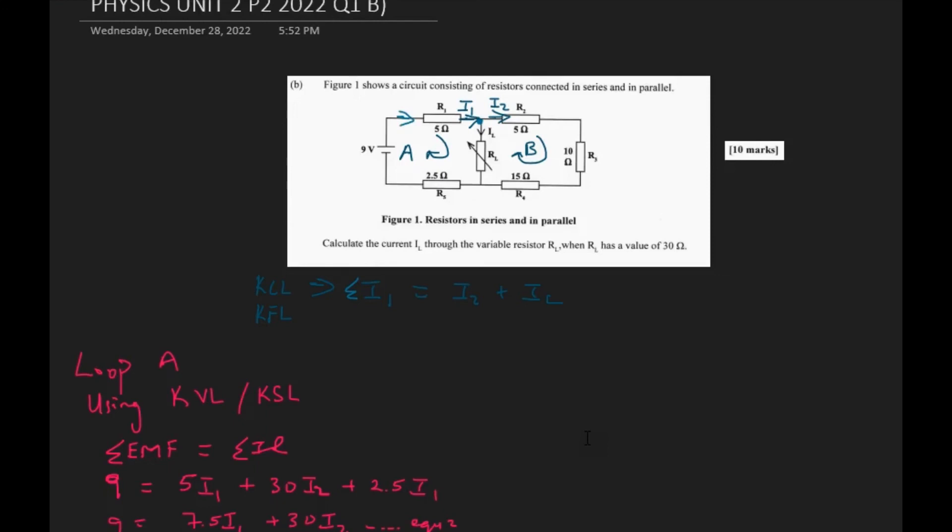The current that is here, i1, is the same one to be flowing through R1, so I have 5i1 plus 30iL. This is supposed to be iL by the way. Because the current is flowing in the same direction in this branch, I simply add them.